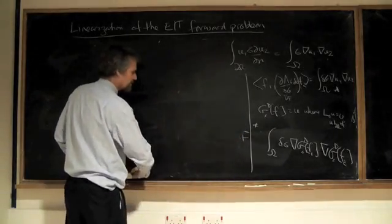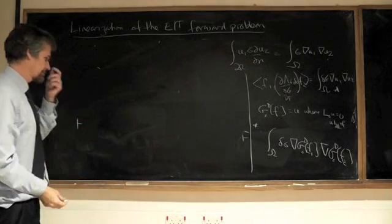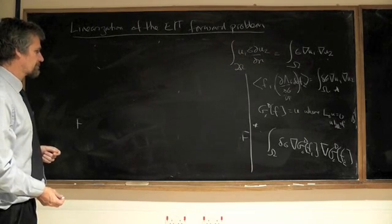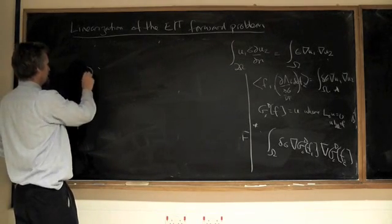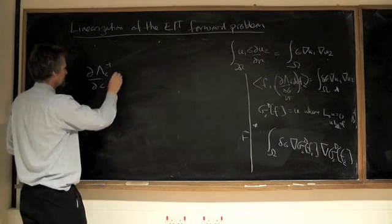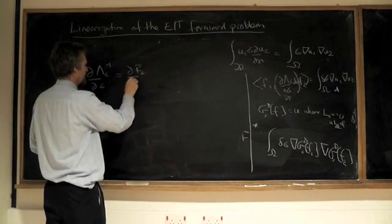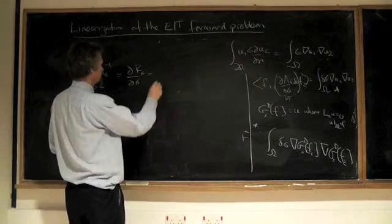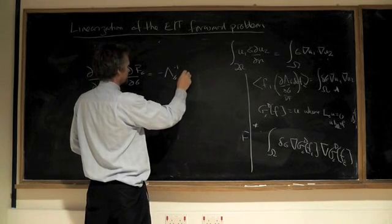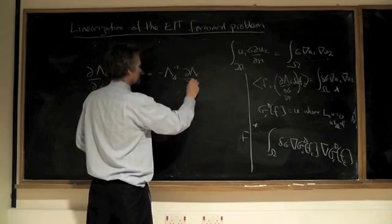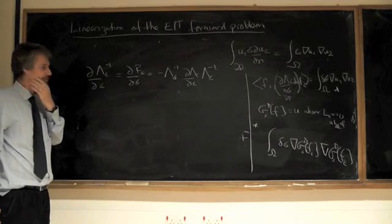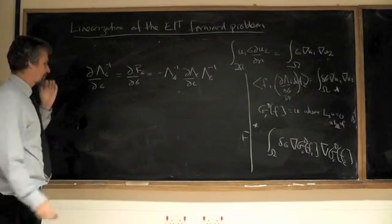Well, we just compose with the inverse. So what we get is that d lambda sigma inverse by d sigma, in other words d r sigma by d sigma, is just going to be minus. And then, okay, that's the formula for inverse.